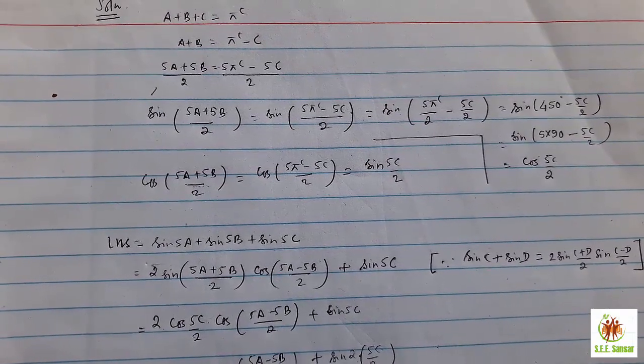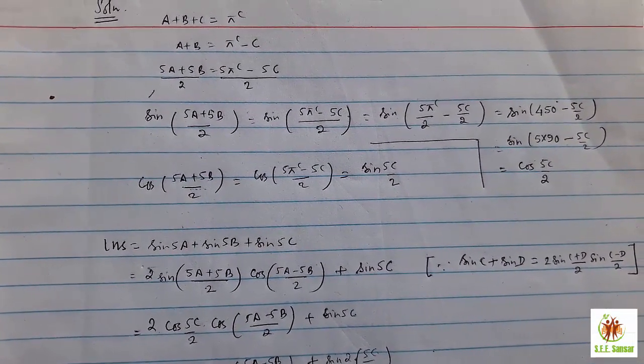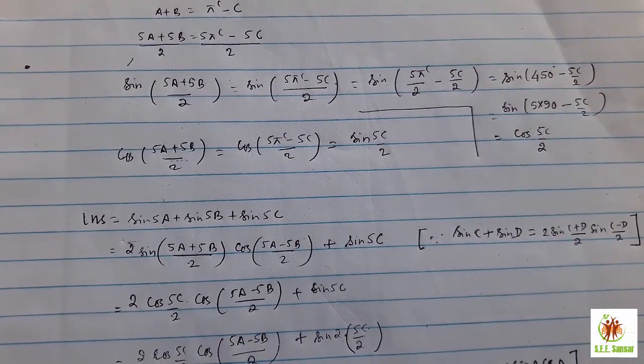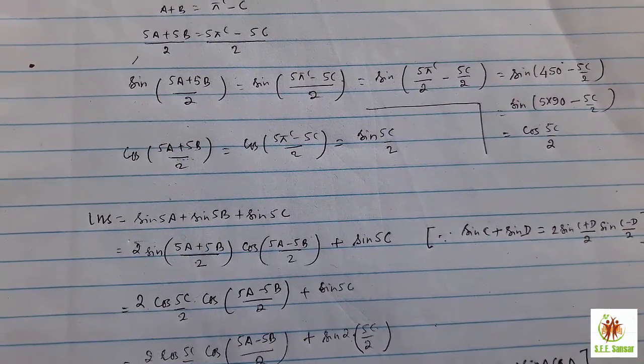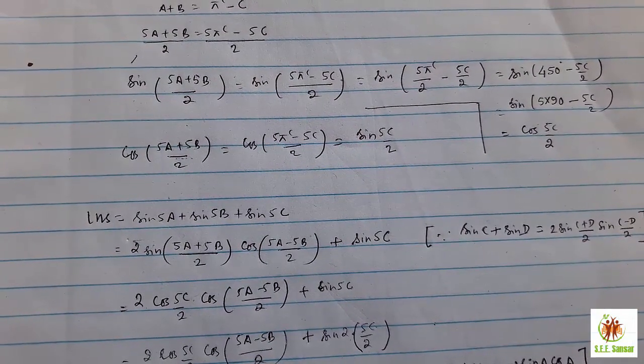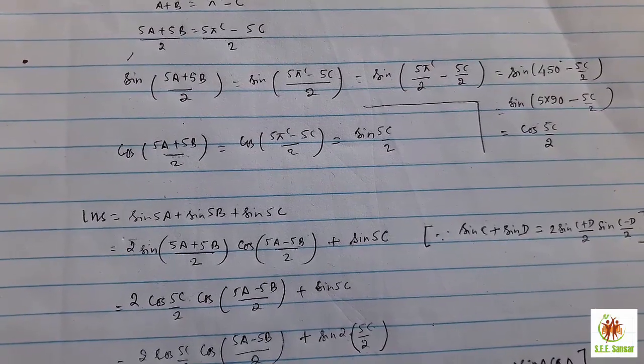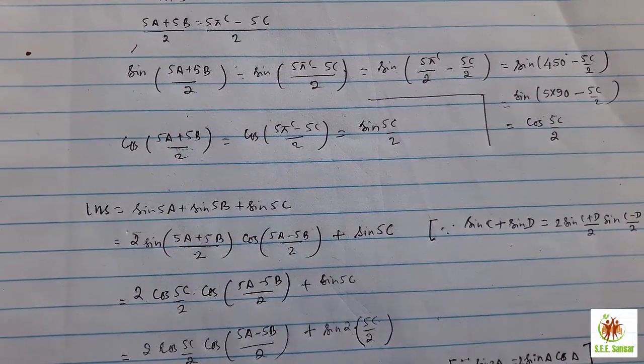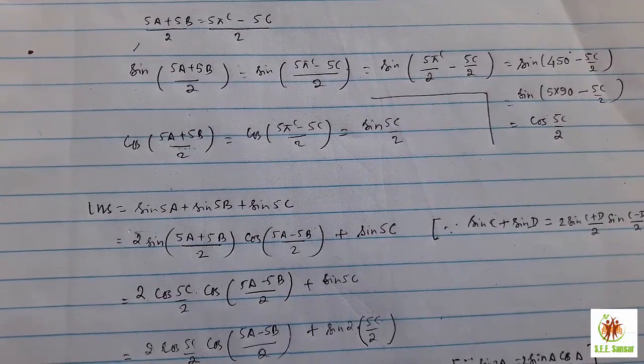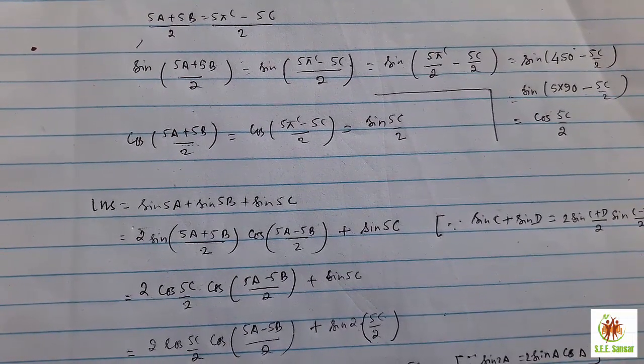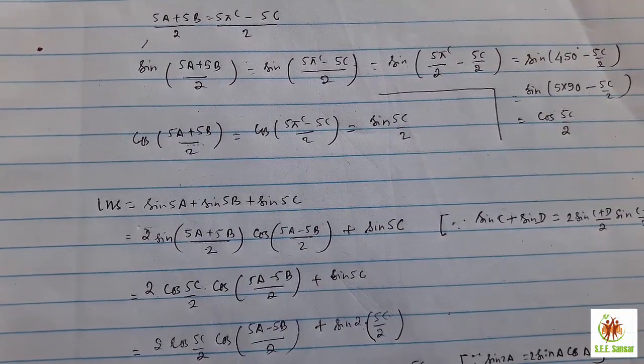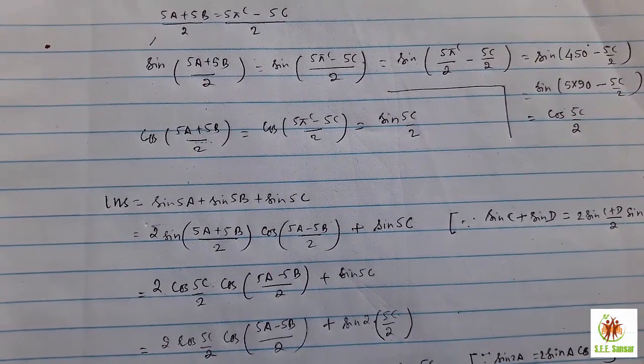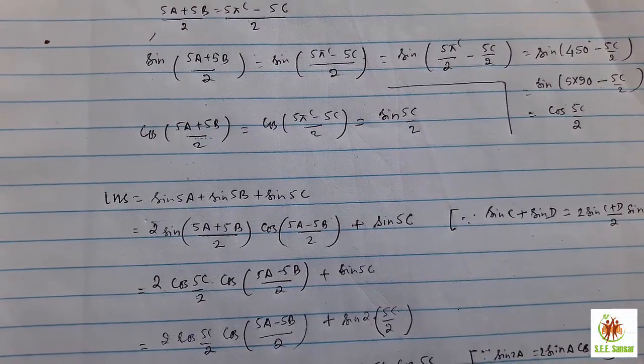You will get sin 5π minus 5c by 2 and separate that 2, distribute that 2 to the 5π radian and 5c individually. Indeed it is 5π radian by 2 is 450. So it is 5 into 90. I talked about the rule, the formula of sin 90 minus θ. Because that 5 is odd number, 5 into 90, the sin is converted into cos. Sin 90 minus θ means cos θ. So cos 5c by 2.